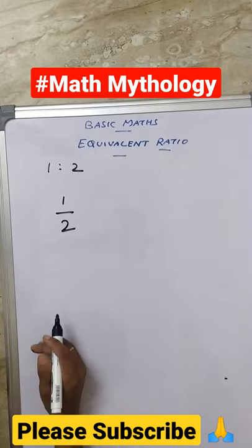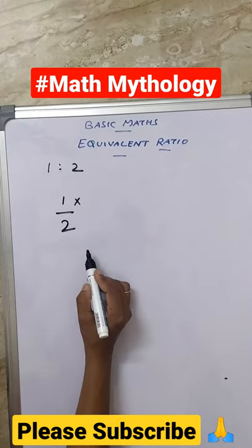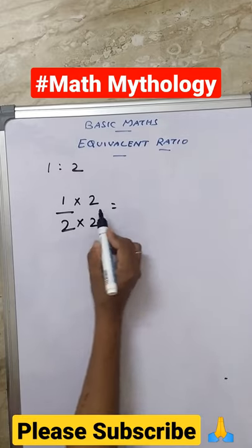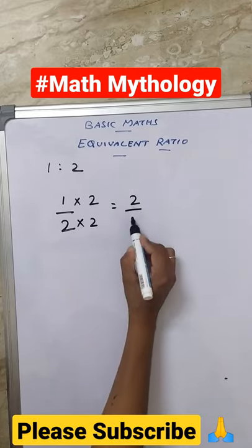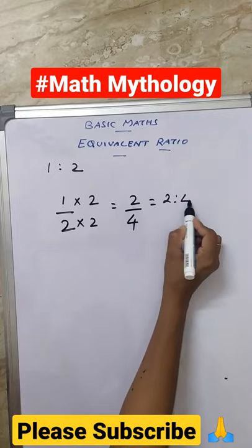Then, the first equivalent ratio you will get by multiplying a common number on numerator and denominator. Here I am multiplying by 2 on numerator and denominator. I will get 1 into 2 is 2 and 2 into 2 is 4. So your first equivalent ratio is 2 is to 4.